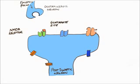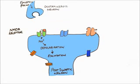In the absence of lamotrigine, glutamate is released into the synaptic cleft and binds to the glutamate site of the NMDA receptor. This causes the opening of the ion channel, leading to an influx of sodium ions. In turn, this causes depolarization and excitation, propagating the action potential from the epileptic focus and resulting in the characteristic seizures seen in epilepsy.